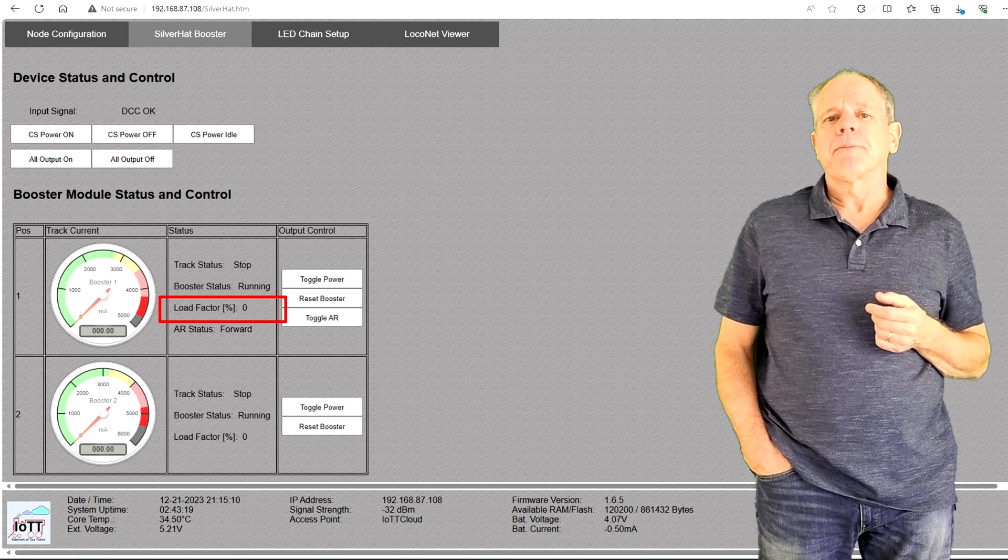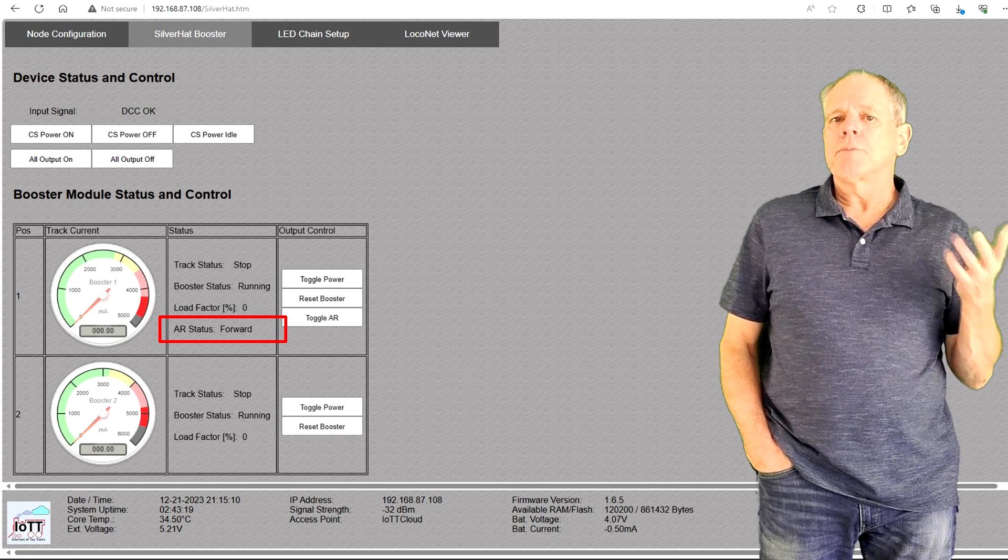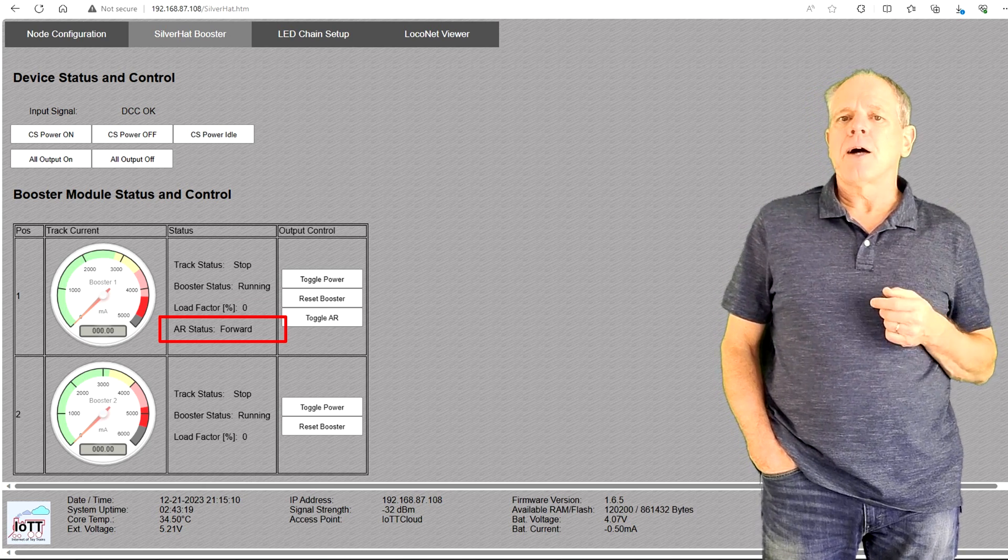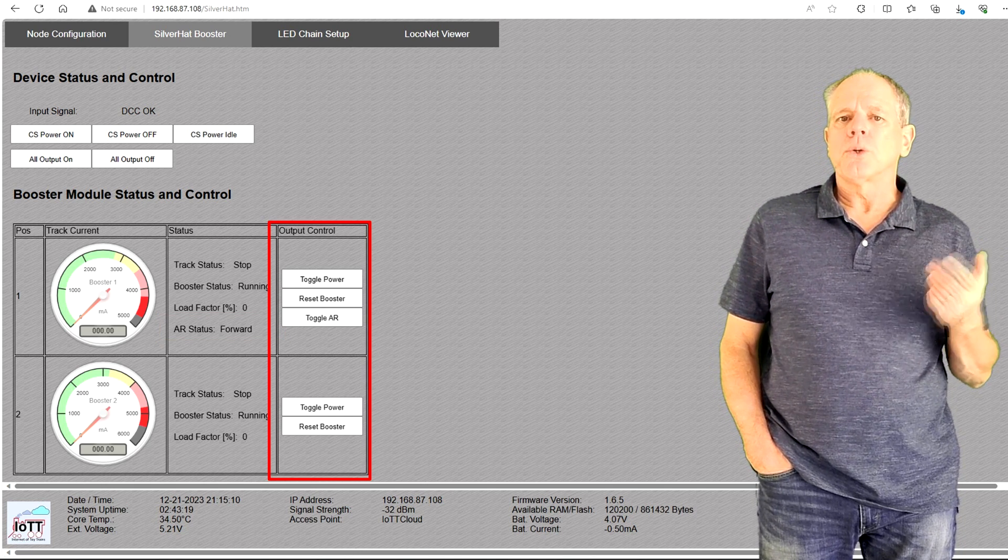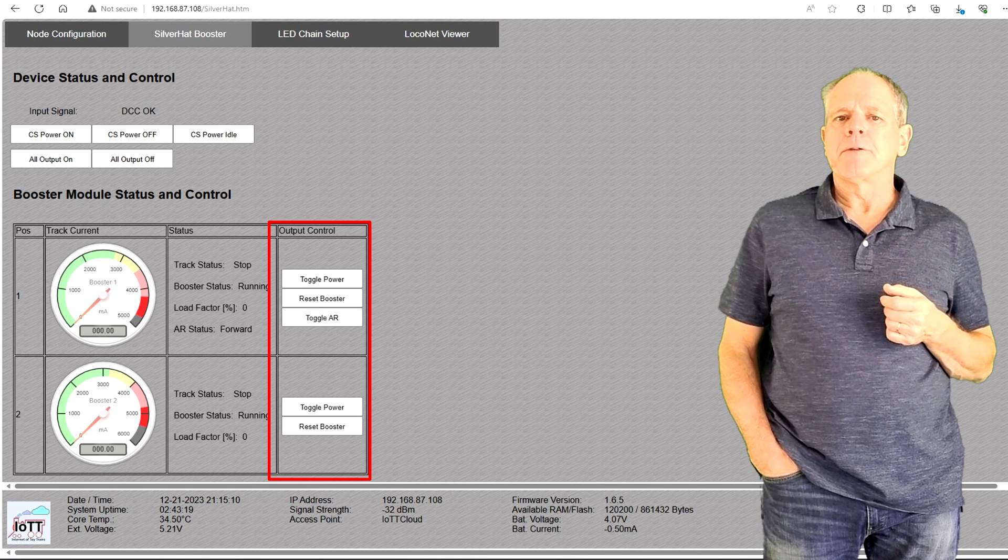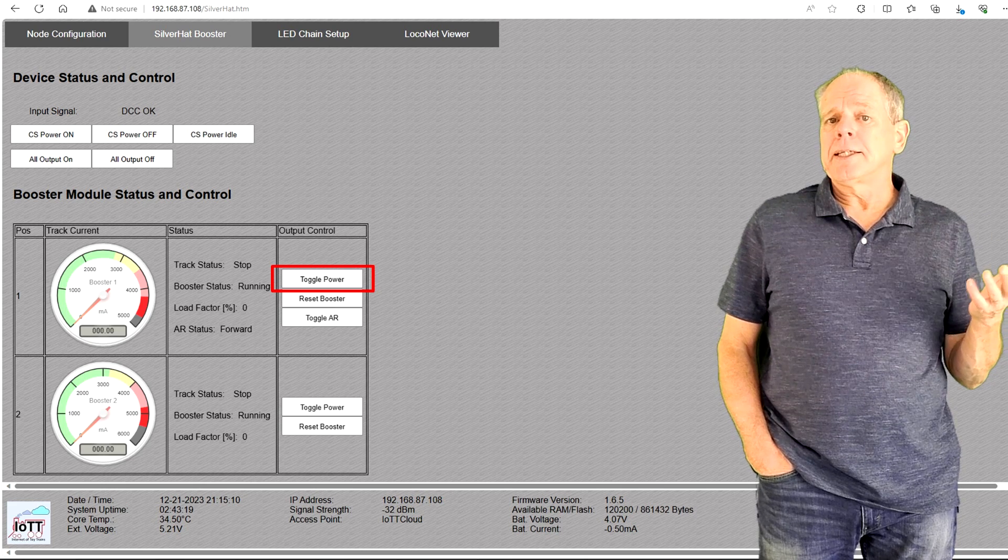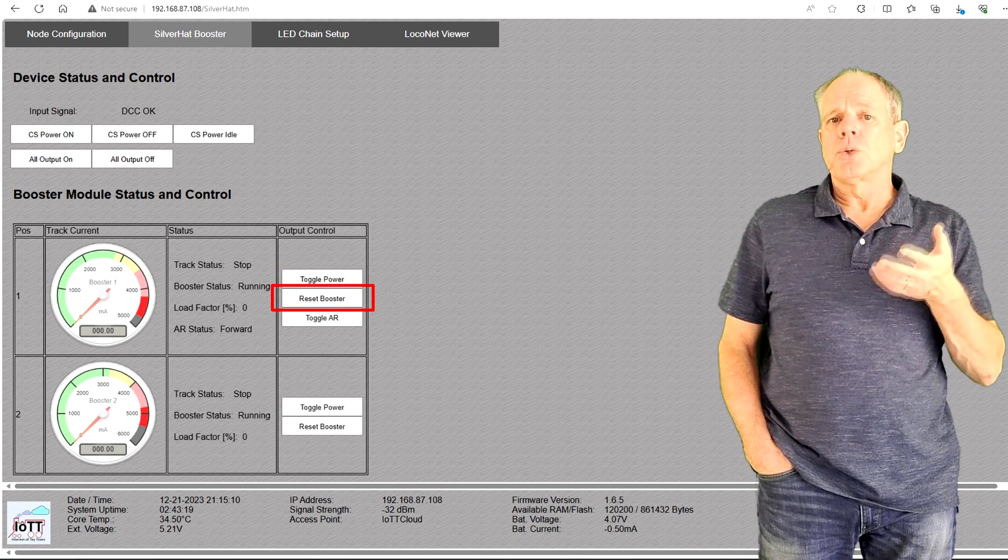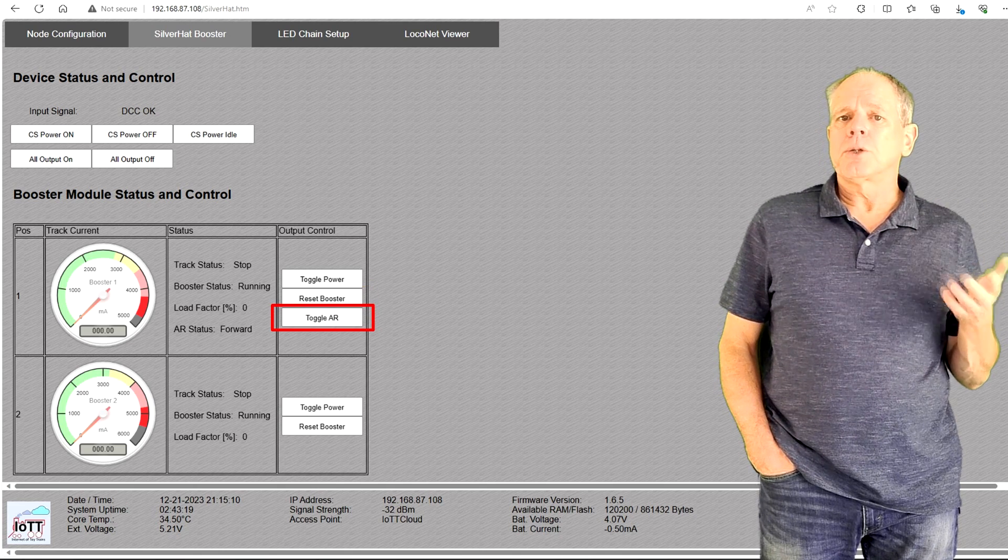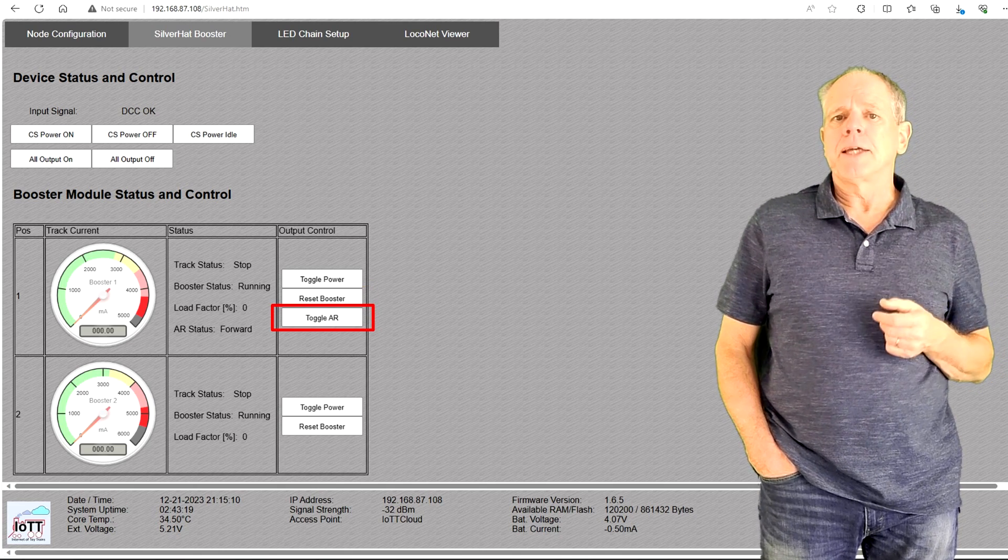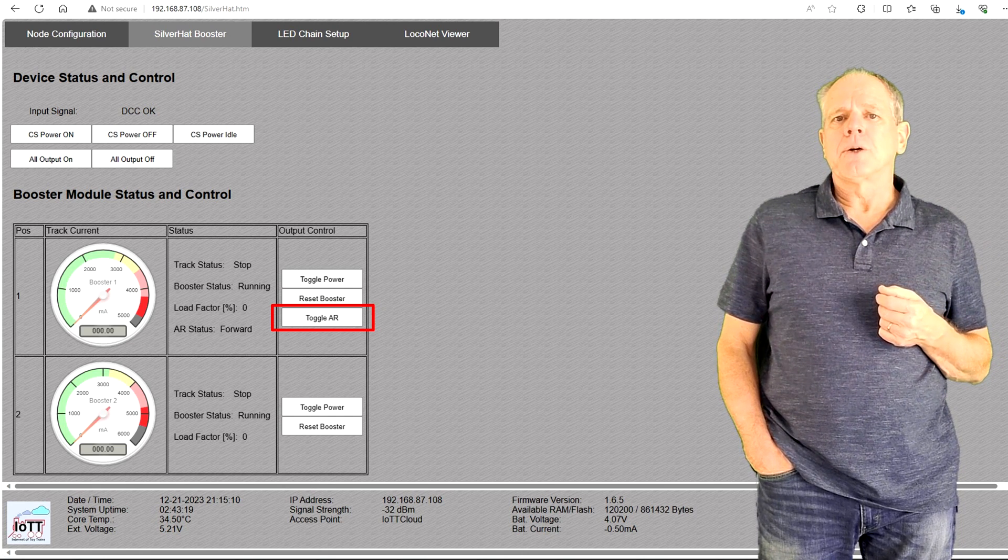If the reverse polarity pin is defined, the last line shows the polarity of the autoreverse output. The buttons in the output control section are used to control the booster from the web interface. Toggle Power switches the track output. Reset is used to clear a short circuit in manual reset mode. Toggle AR is used to manually change the polarity of the output. This button only shows if a reverse output pin is configured.